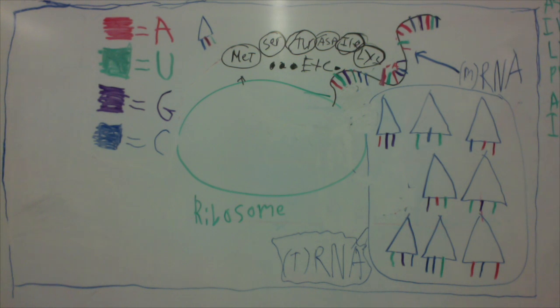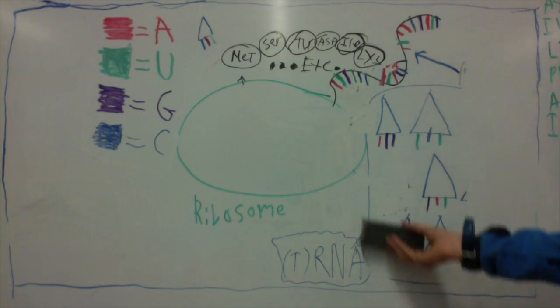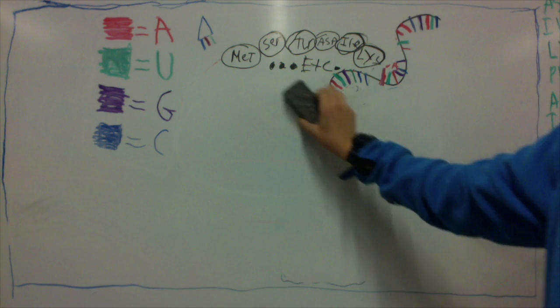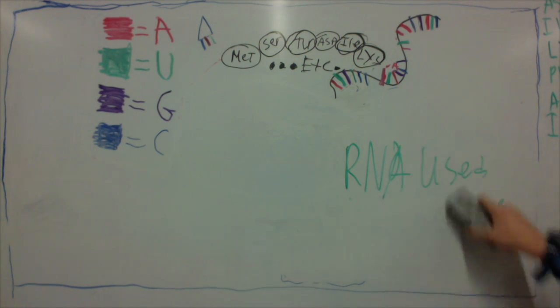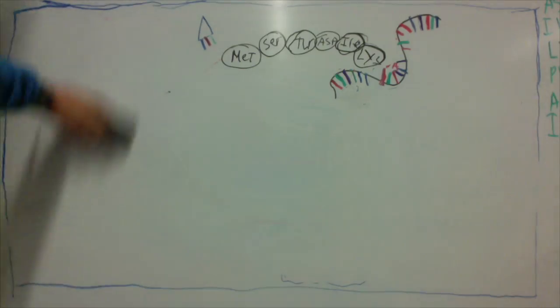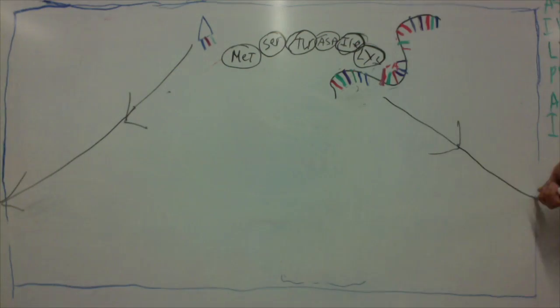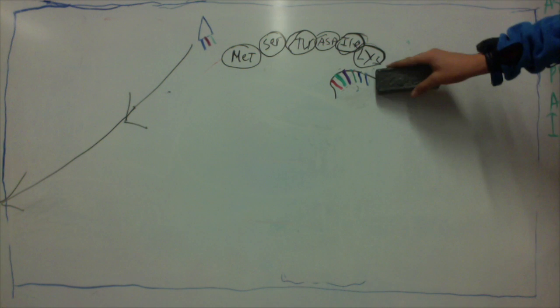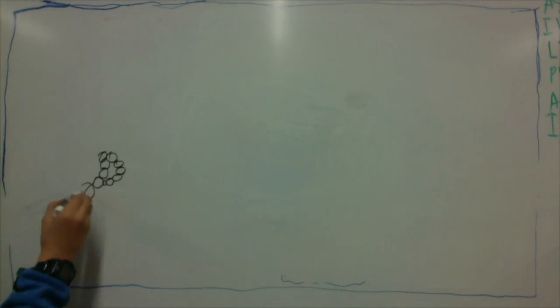This string continues for many hundreds of amino acids, and when it's done, the mRNA and tRNA can go on to make more proteins, and the protein itself now begins its job.